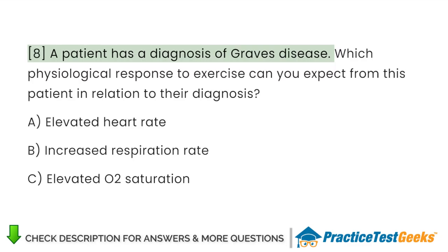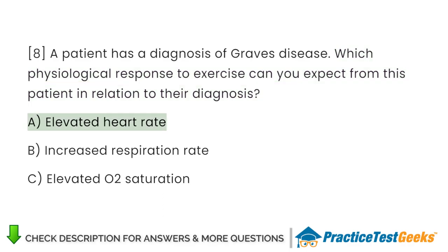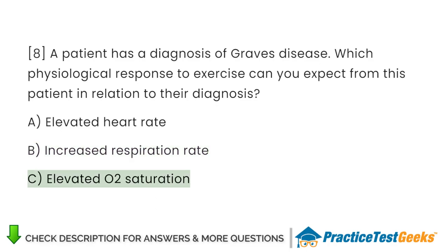A patient has a diagnosis of Graves' disease. Which physiological response to exercise can you expect from this patient in relation to their diagnosis? A. Elevated heart rate. B. Increased respiration rate. C. Elevated O2 saturation.